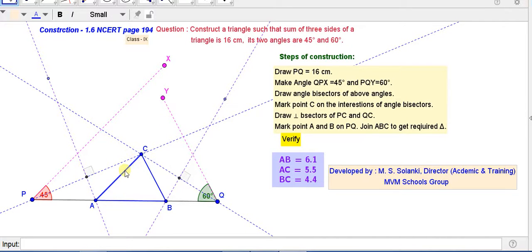Now, the length of the side AC is 5.5 cm and PC is 4.4 cm and AB is 6.1 cm. It is here. So, AB is 5.5 cm and BC is 4.4 cm. If you add them, it will be 16 cm. So, sum of all the three sides.